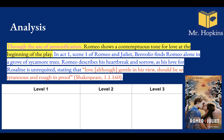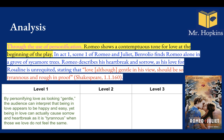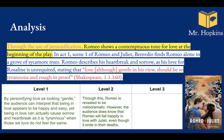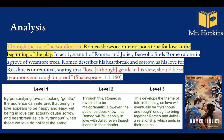Basically, love seems like a nice thing, but being in it is actually really horrible. By personifying love as gentle, the audience can interpret that being in love appears to be happy and easy, yet being in love can actually cause sorrow and heartbreak, as it is tyrannous when those we love do not feel the same. Through this, Romeo is revealed to be melodramatic. However, the audience knows Romeo will fall happily in love with Juliet, even though it ends in their deaths. This develops the theme of fate, as love will eventually be tyrannous and rough enough to bring them together and then end in their deaths.